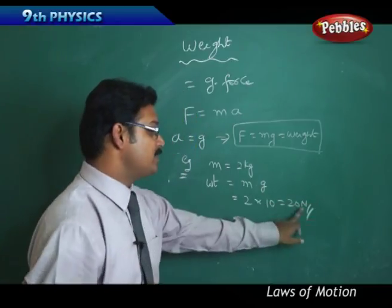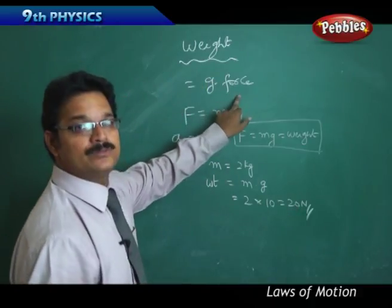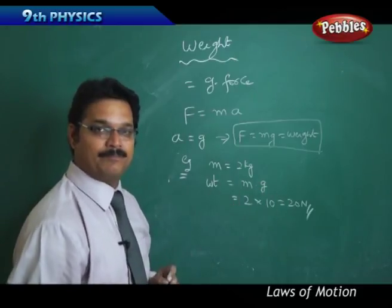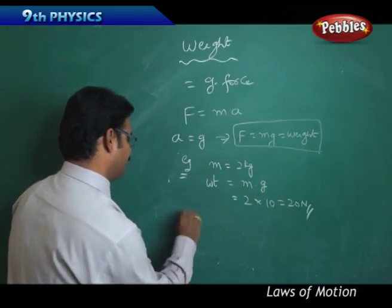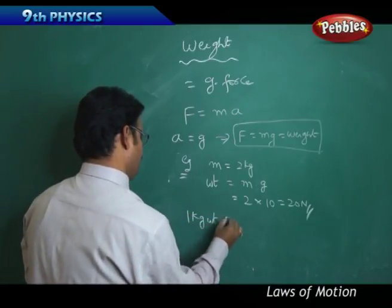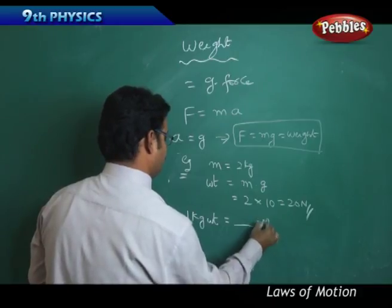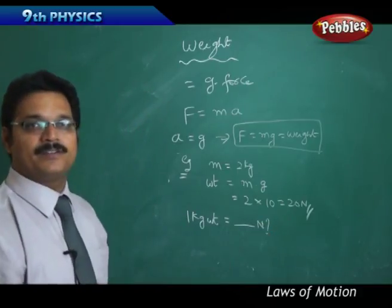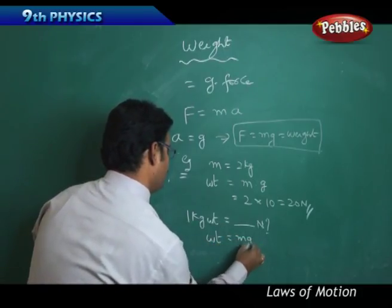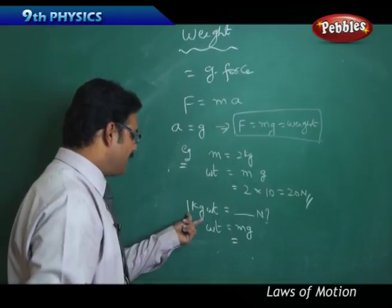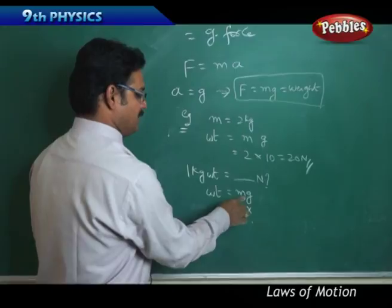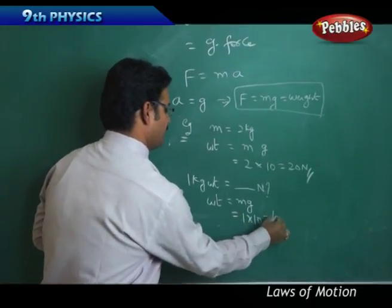Why I have mentioned Newton? Because weight is nothing but force, so force unit and weight unit both are same. Now see, if I say 1 kg weight equals to how many Newtons? Simply use the formula: weight = m into g. 1 kg mass times g equals 10, so it is 10 Newtons.